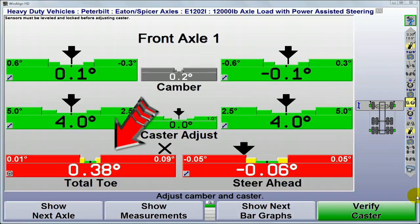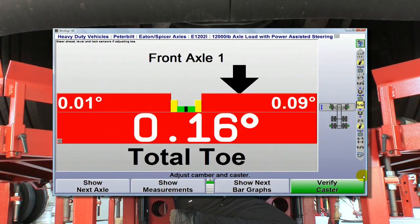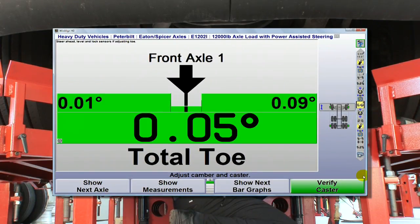While viewing the bar graph, adjust to green and center the arrow. Toe correction is fast and precise.